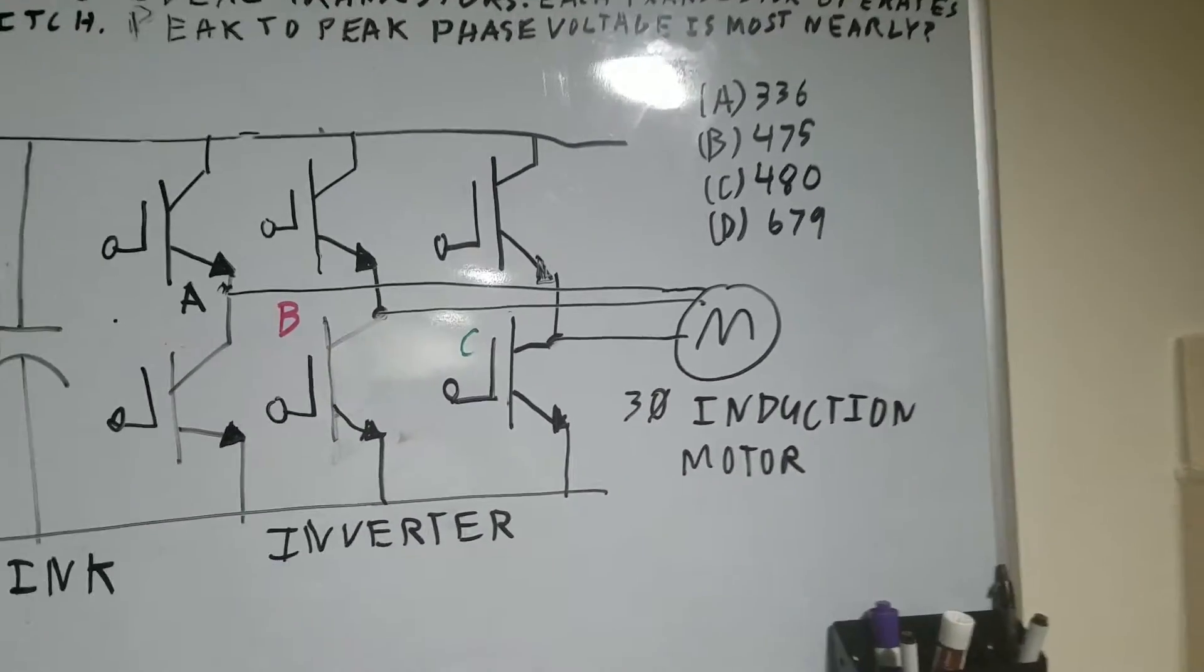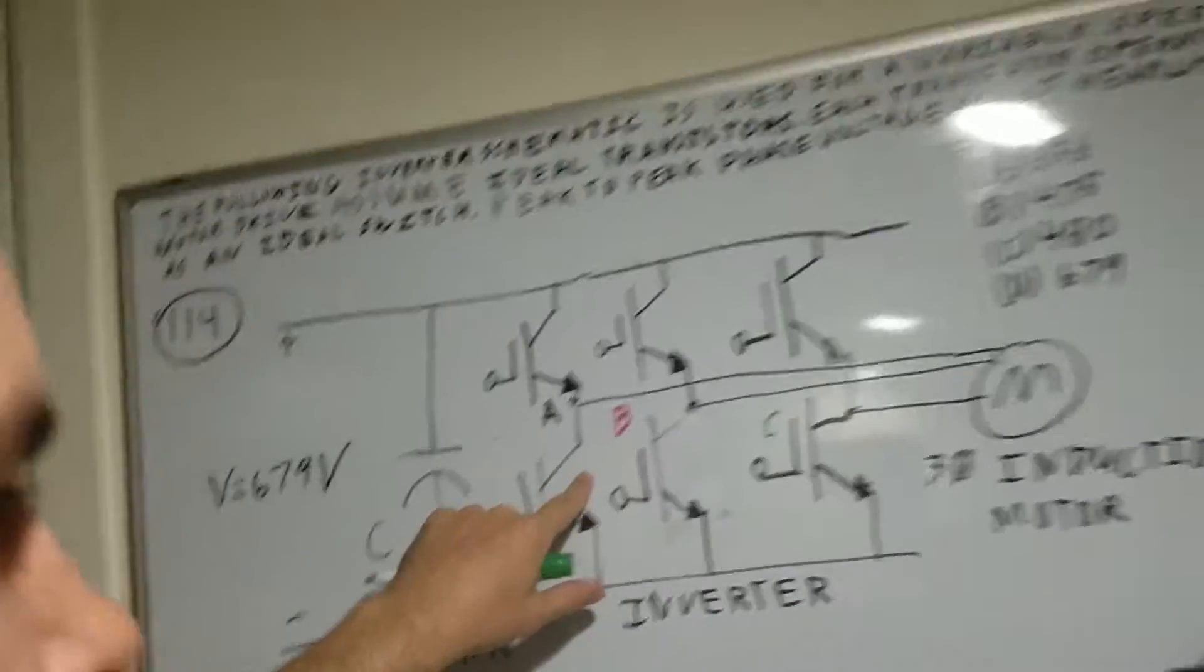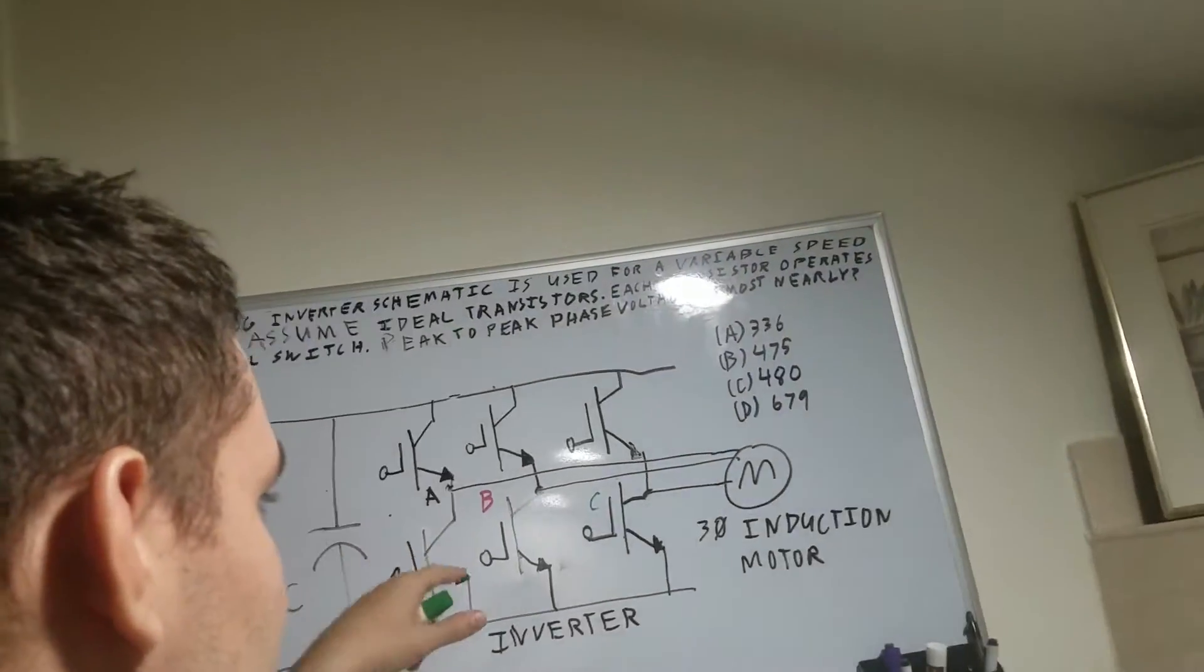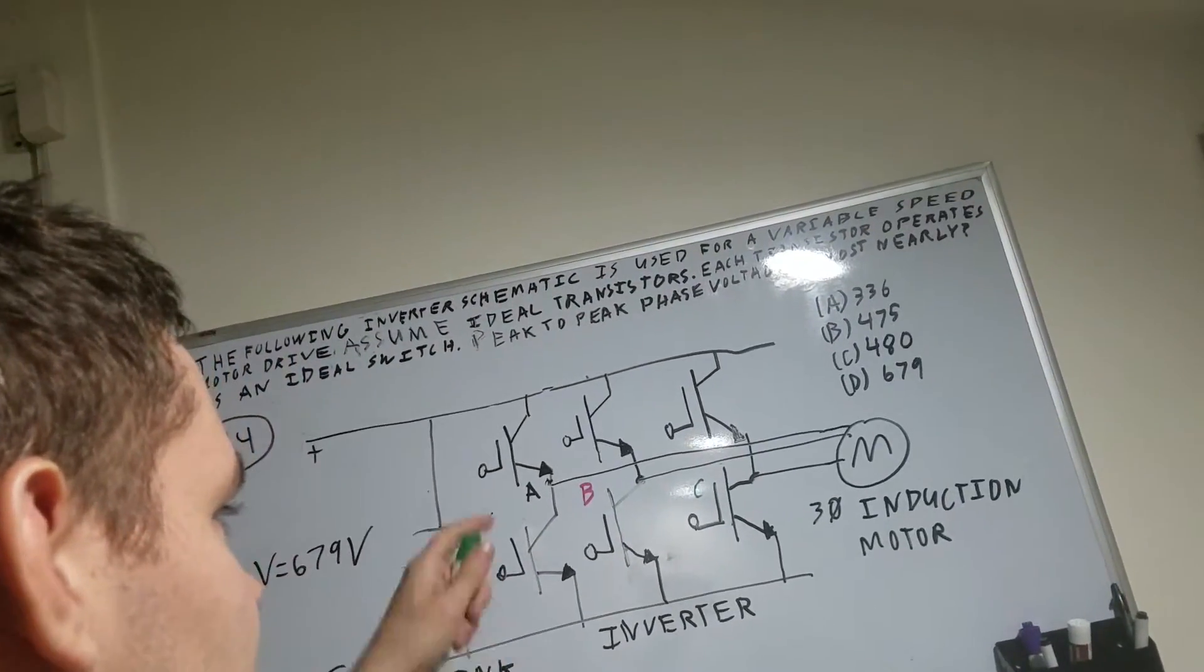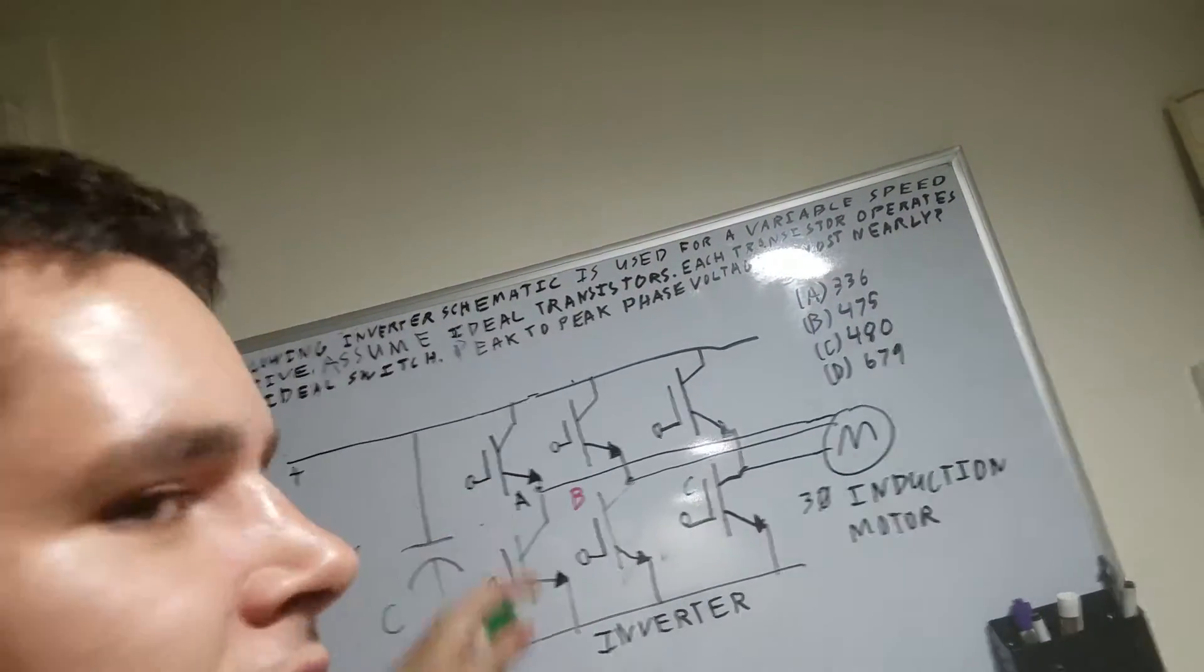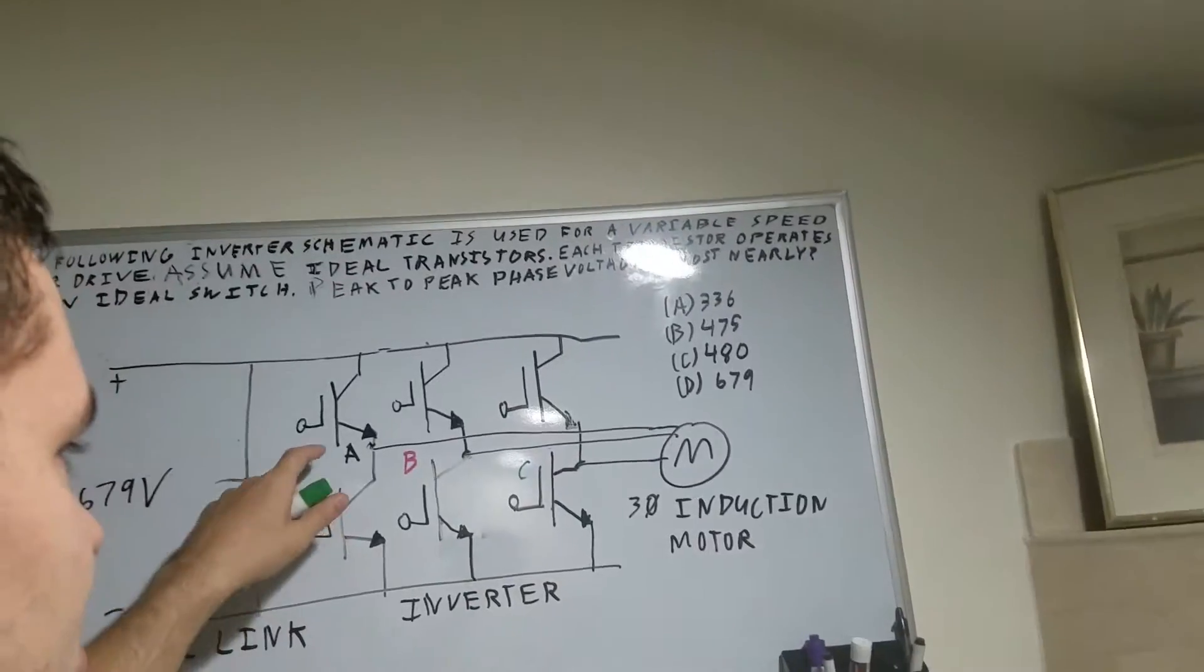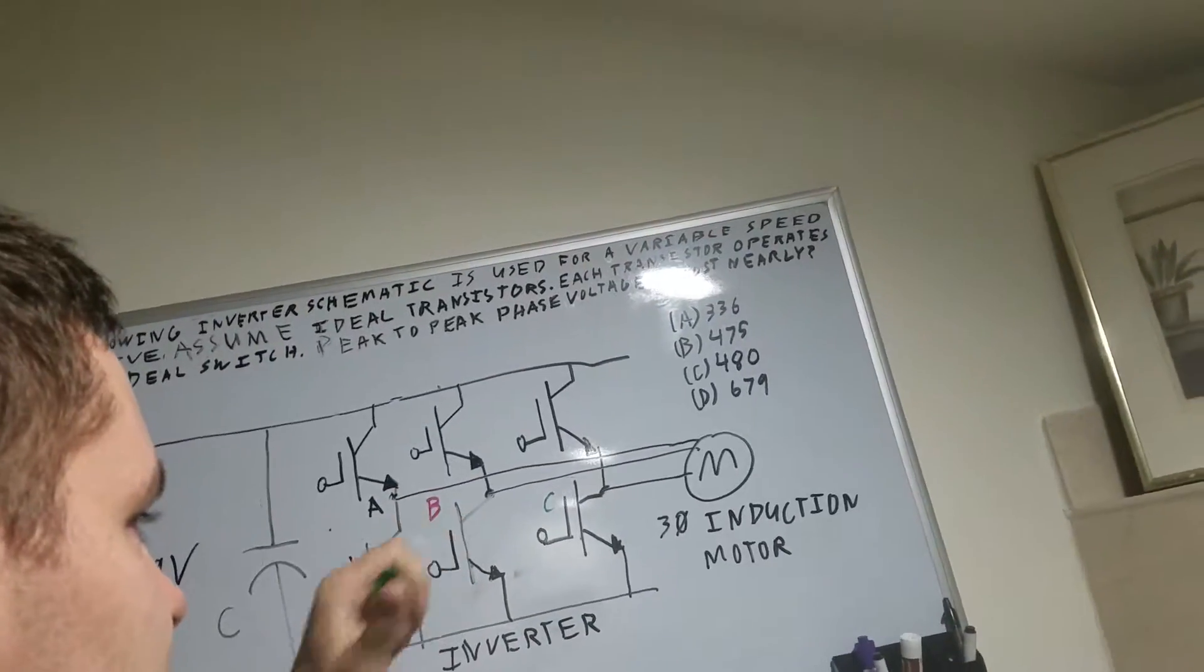So if you look at how this circuit works, you have a larger controller which is going to turn these transistors on and off in order to activate these phases which will drive the motor.